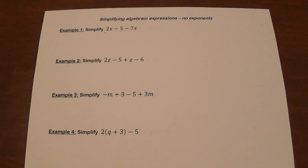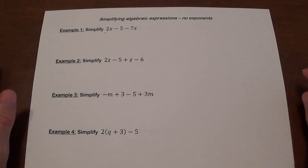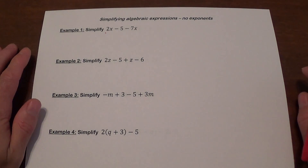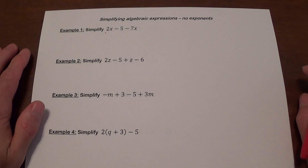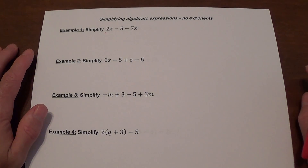We are going to talk about simplifying algebraic expressions. This is for easier cases when no exponents are going to be involved in these problems. We have something called like terms. Like terms are going to be terms that contain the same variable. The number in front of it that we call a coefficient is not going to make any difference.